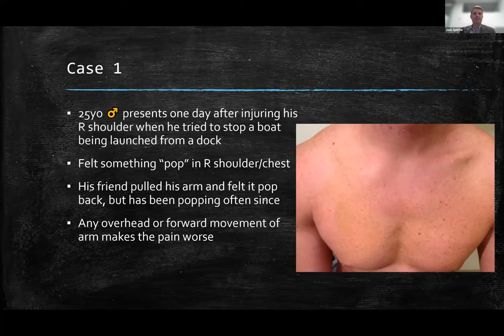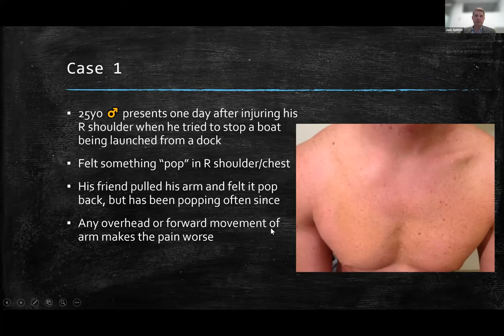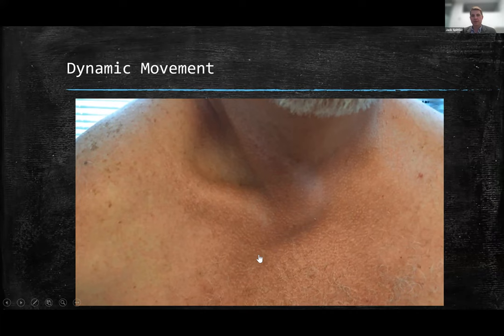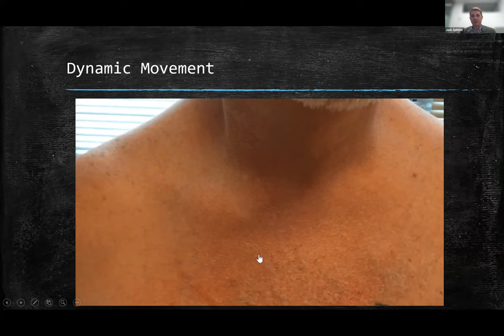Here's the first case: a 25-year-old male was trying to unload his boat at a dock. The boat slipped and he caught it, then felt a sudden pop in his chest. His friend pulled his arm and he felt it pop back, but it's been popping in and out since. You can see there's some asymmetry and swelling on that right medial portion of the clavicle. This is a different patient, but this is what it might look like — you can see the medial clavicle moving. Fortunately, it's anterior.